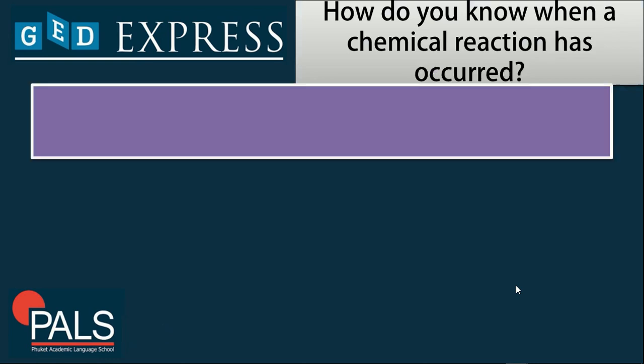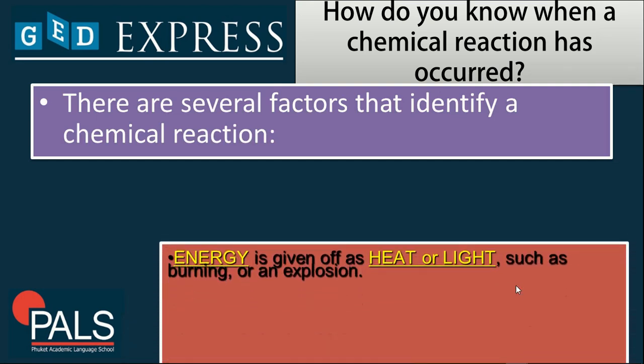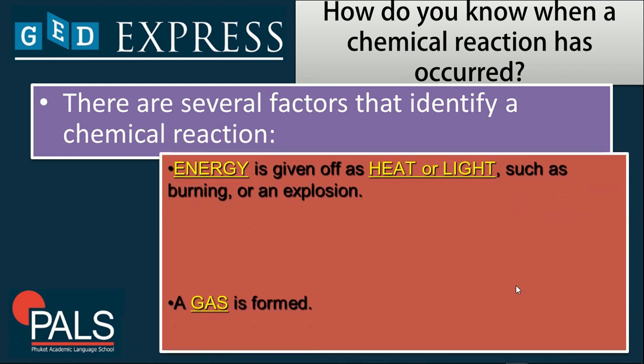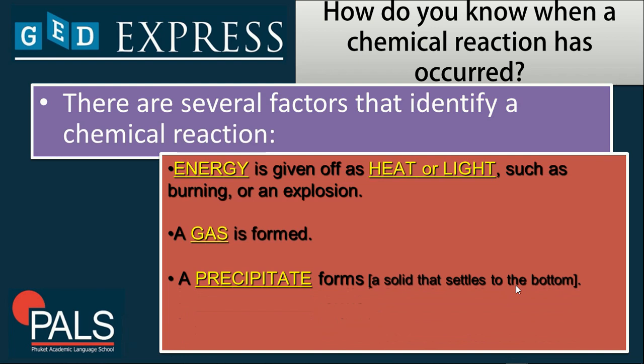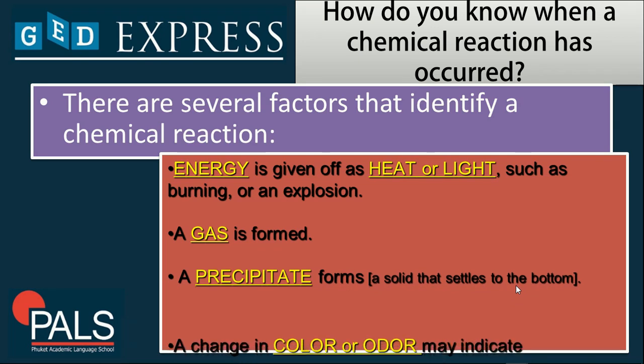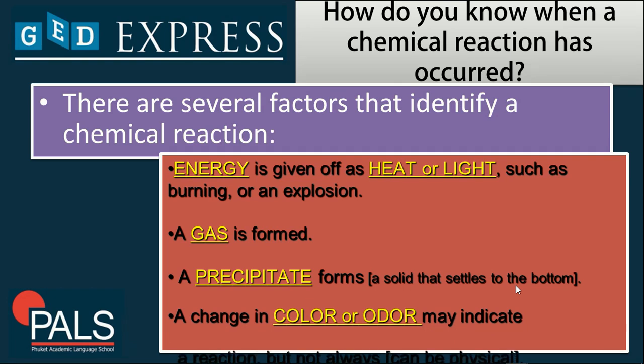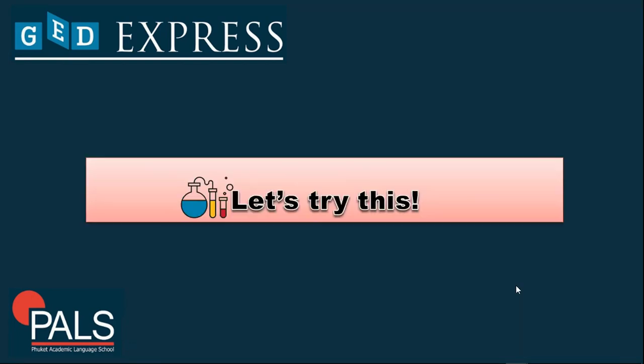How do you know when a chemical reaction has occurred? There are several factors that identify a chemical reaction. It could be energy is given off as heat or light, such as burning or an explosion, or a gas is being formed. It could be a precipitate, wherein it forms a solid that settles to the bottom, or there is a change in color or odor, which indicates that there is a chemical reaction, but not always, because it can be physical.